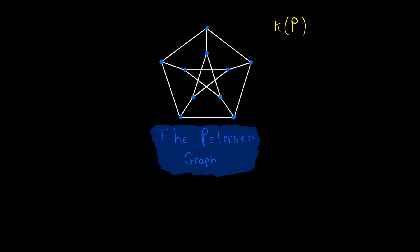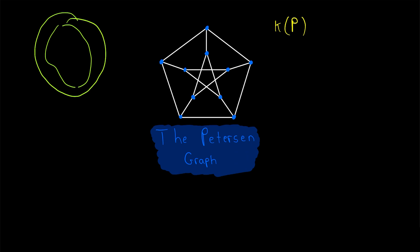For example, a cycle graph with at least four vertices, roughly speaking, looks something like that. In order to disconnect a cycle graph, we need to delete one vertex, which turns it into a path graph, and then we need to delete a second vertex that is on the interior of the path, and that will disconnect the cycle. That's the minimum number of vertices we can delete to disconnect a cycle graph with at least four vertices, so the vertex connectivity of such graphs is equal to two.